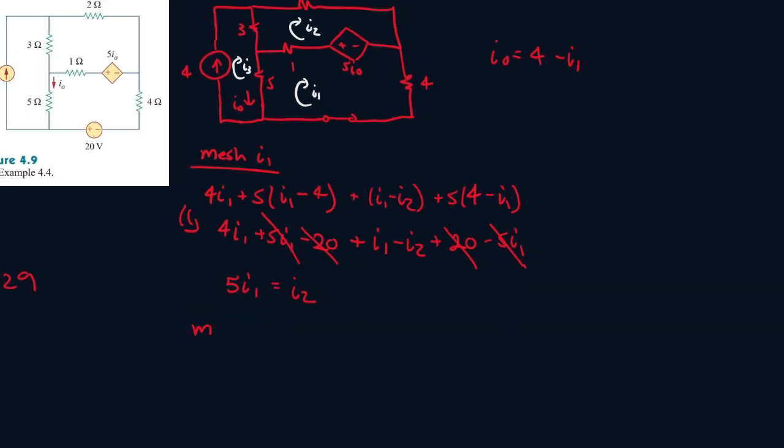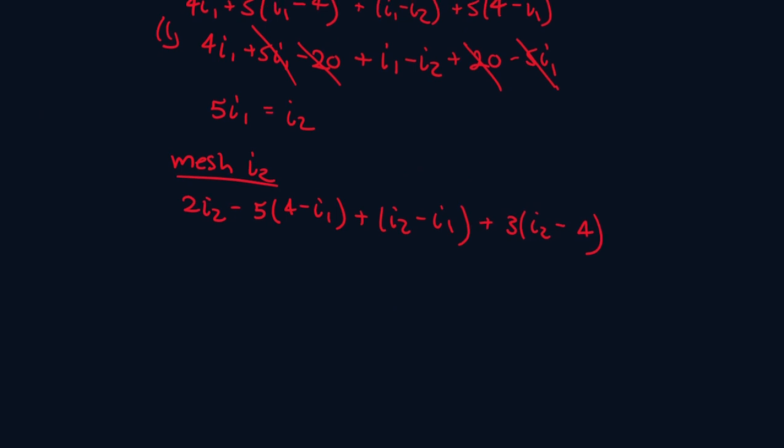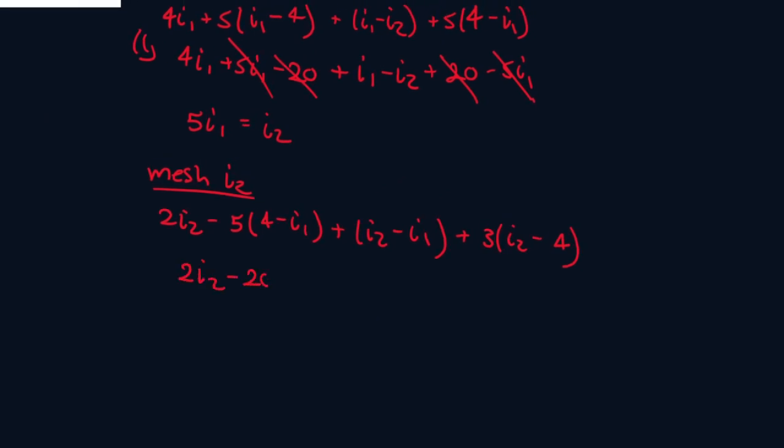Now let's write an equation for mesh I2. So we see 2I2 minus 5I0, and we recall I0 is 4 minus I1. So we have 2I2 minus I1 plus 3I2 minus I1 plus I2 minus I1 plus I2 minus I1 plus 3I2 minus I1.